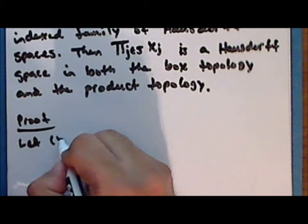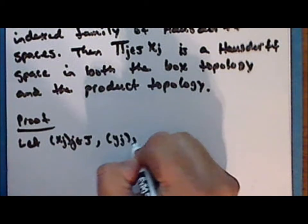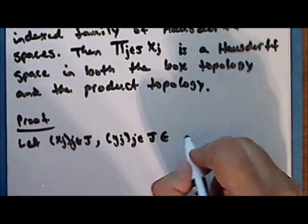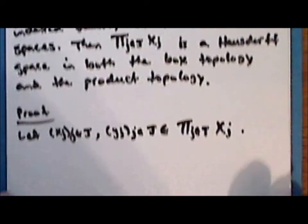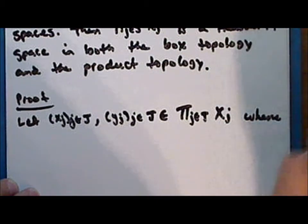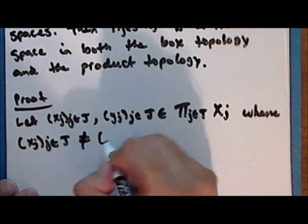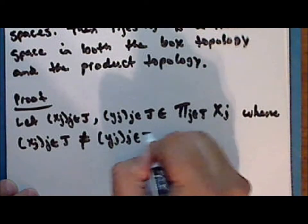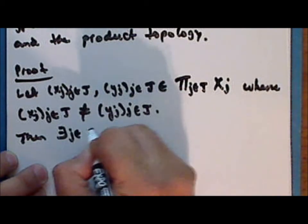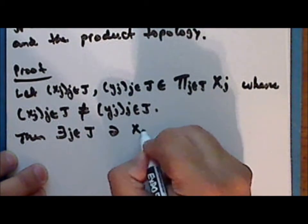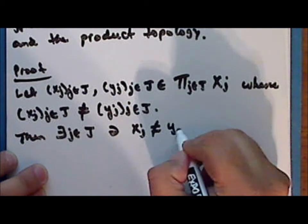Proof: let the j-tuple x and the j-tuple y be two j-tuples in the product set of topological spaces such that these two j-tuples are distinct. Then there exists at least one index j such that the j-th coordinate of the j-tuple x is not equal to the j-th coordinate of the j-tuple y.